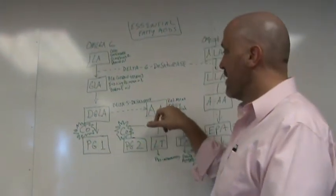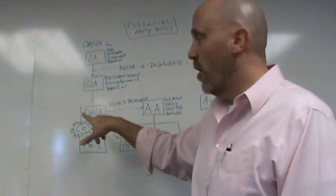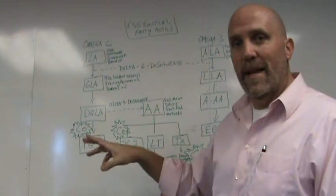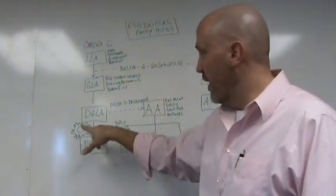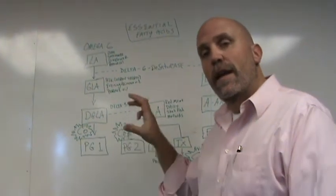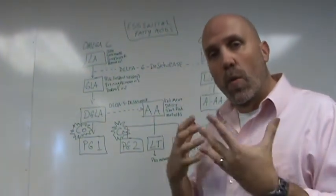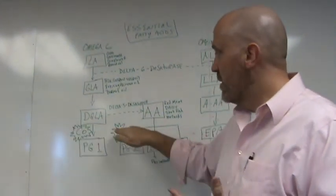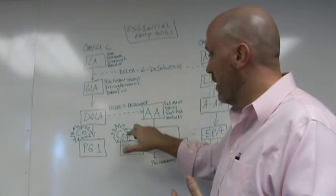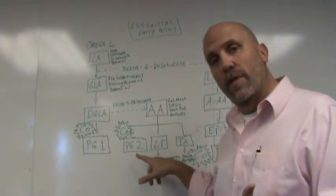So your arachidonic acid, now here's something I want to explain first. All of these are converted into these prostaglandins by an enzyme called cyclooxygenase (COX). All of them are converted by that enzyme. Now, when you take a non-steroidal anti-inflammatory drug, what it does is it inhibits this enzyme. So it cuts off, basically, this pathway, which causes your inflammation. So that's how you get relief from the inflammation.